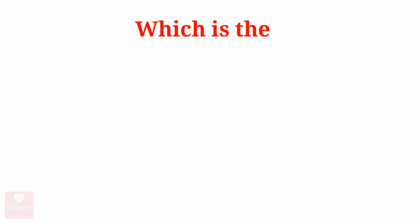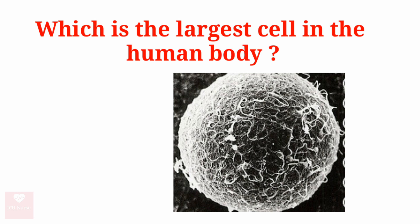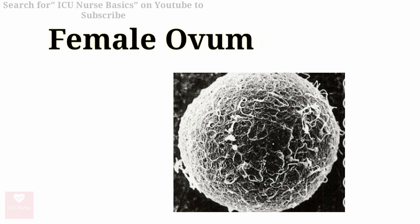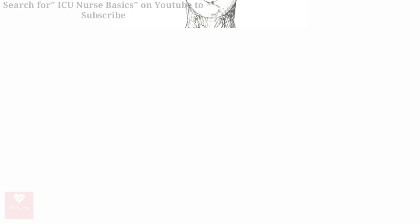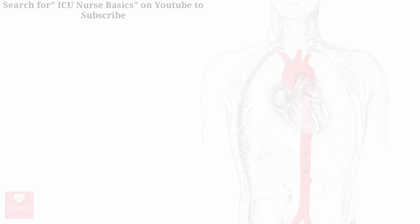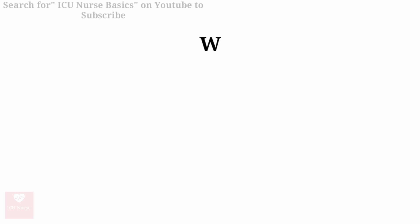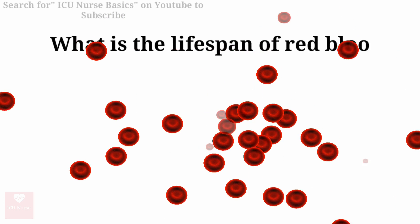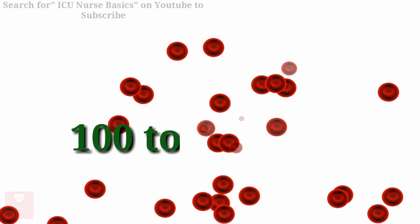Which is the largest cell in the human body? The largest cell in the human body is the female ovum, or egg. Which is the largest artery in the human body? The largest artery in the human body is the aorta. What is the lifespan of red blood cells? The lifespan of red blood cells is 100 to 120 days.